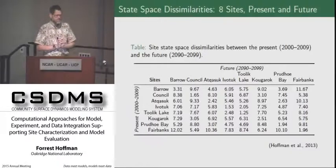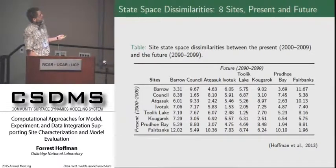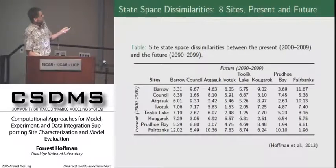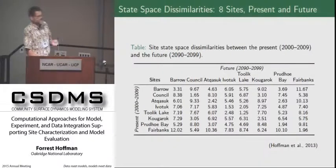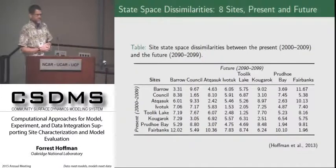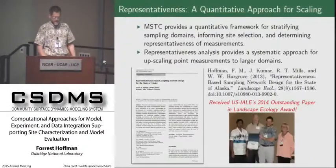This is a really useful metric — it doesn't have any units because it's that simple Euclidean distance in phase space, but it's a nice way of seeing how similar or different sites are from each other. Since we did it through time, we can fill out that full two-dimensional matrix where we've got space and time — how similar is present-day Barrow to future Barrow, or how different is it? We can see that present-day Barrow is more different from Council than it will be in the future, so that representativeness changes. This gives us a quantitative way of understanding how similar or different locations are, which helps us explain the representativeness of our measurements.